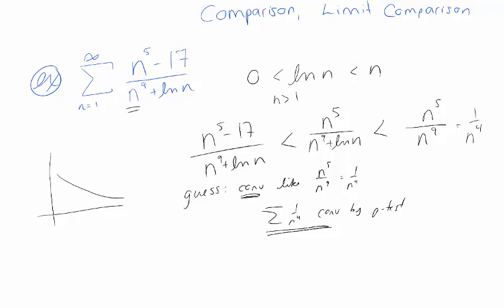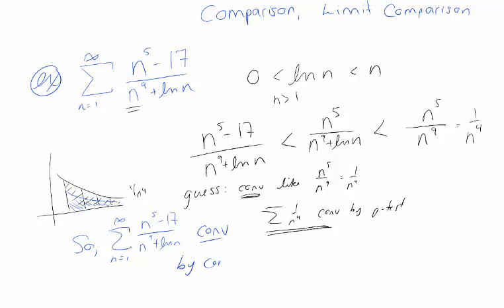The picture is: I'm adding up terms like 1/n^4 and getting some finite sum — there's a finite area under that curve. My original series has even smaller terms, so if the area under the 1/n^4 series is finite, the area under my original series has to be finite as well. So this series converges by the comparison test, because it's smaller than a comparison series that converges.